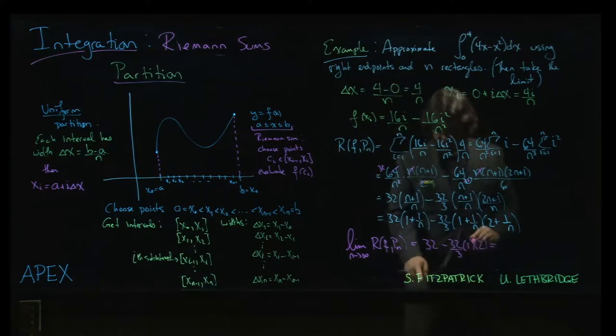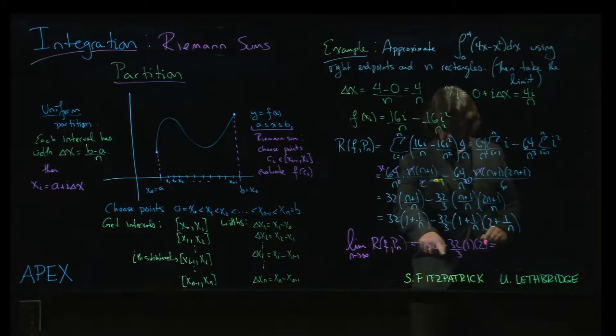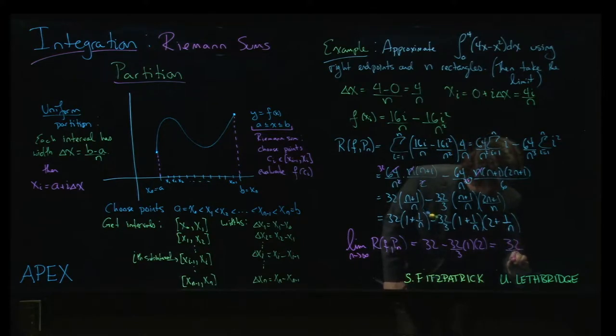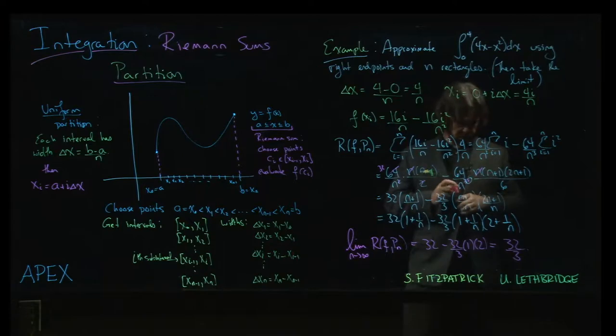And so in the end what we get, so that's 32. If I factor out the 32, I'm left with 1 minus 2 thirds, so 1 third. So the whole thing is just 32 over 3 as the value of the integral.